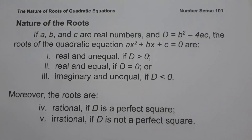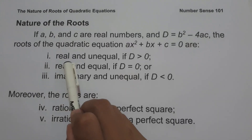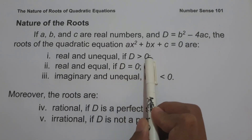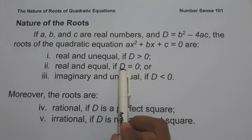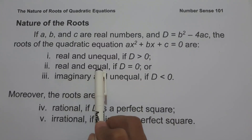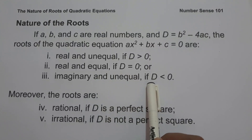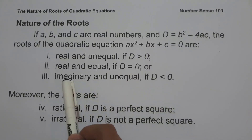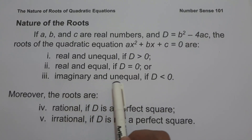The roots of the quadratic equation ax squared plus bx plus c equals 0, where a, b, and c are real numbers, are real and unequal if the discriminant is greater than 0. If the discriminant is equal to 0, the roots are real and equal. If the discriminant is less than 0, the roots are imaginary and unequal.